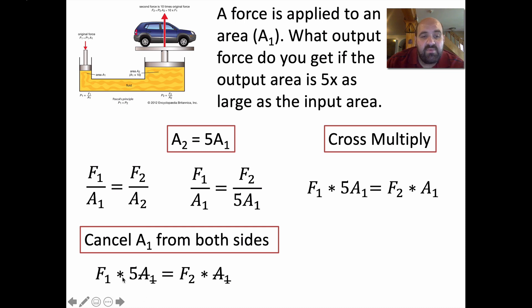And then what we're going to do is we are going to cancel out. There's something on both sides that we can get rid of. There's an A₁ over here. There's an A₁ over here. We can simply divide both sides by A₁ and cancel it. And what are you left with? You're left with F₁ times 5 equals F₂. So, F₂ equals 5F₁. So, we got the same result. In the last one, the area was 10 times larger. So, the output force was 10 times as strong. In this case, the area is 5 times larger. The output is 5 times as strong, the output force.